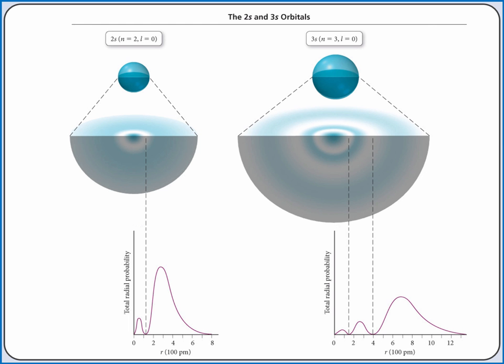As we increase the principal quantum number, the 2s and 3s orbitals become larger, but retain their shape of a sphere. The graphs of their total radial probability also show that there are distances within the sphere where the probability of finding an electron drops off, only to increase again. These low points in the probability are called nodes.